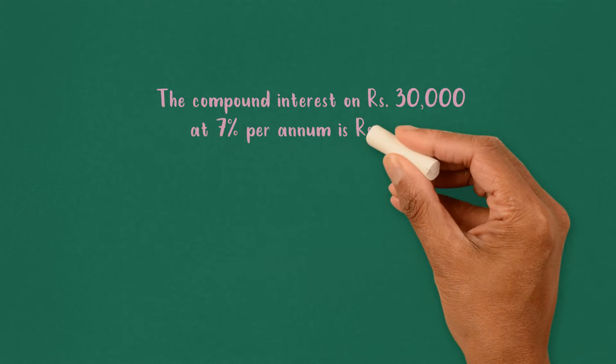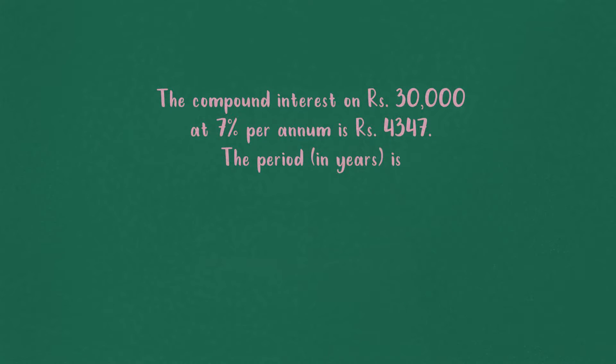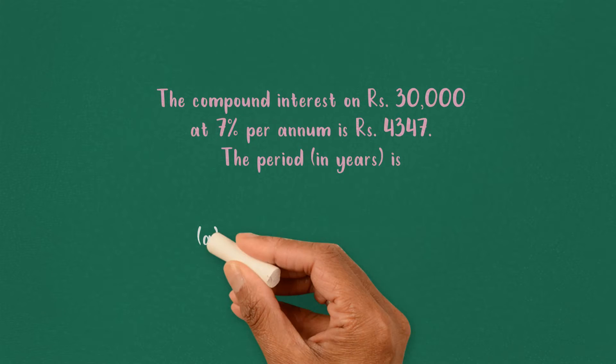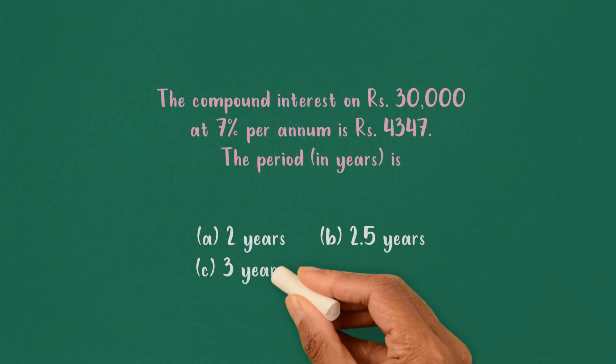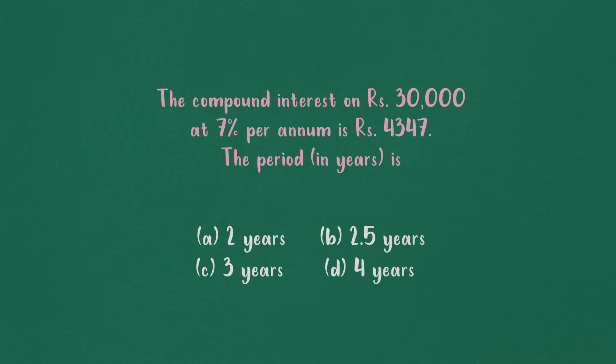The compound interest on rupees 30,000 at 7% per annum is rupees 4,357. What is the time period in years?